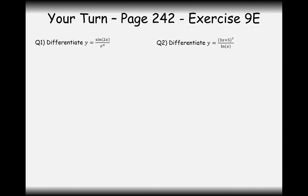So that's basically it — that's all you need to do. Have a go at these two questions on your own: write out f(x) equals and g(x) equals, differentiate both, and then just apply the rule. Nice and easy. Pause the video and try these two questions out.